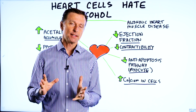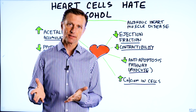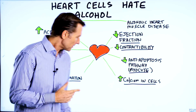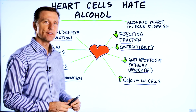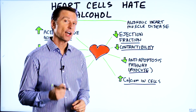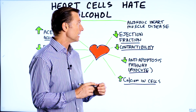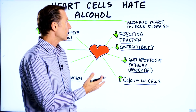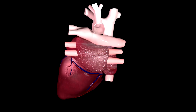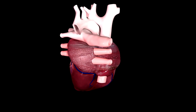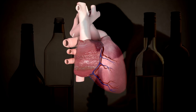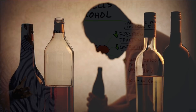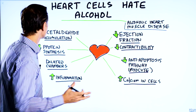I've done a lot of videos on the toxic effect of alcohol on the liver, but I haven't done a video showing the effects of alcohol on the heart tissue. So let's talk about that. There is a condition called alcoholic heart muscle disease where the heart becomes very dysfunctional because of the chronic use of alcohol. But alcohol in general will create several problems with the heart tissue.